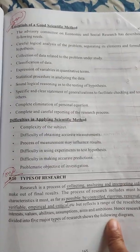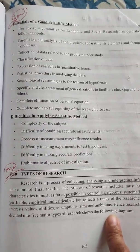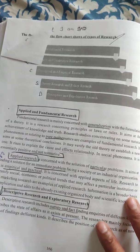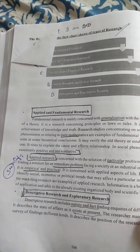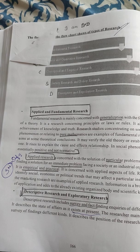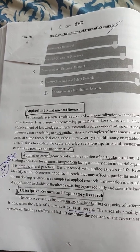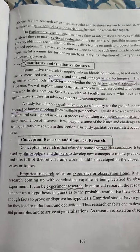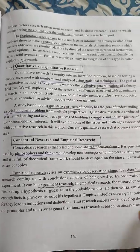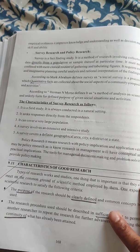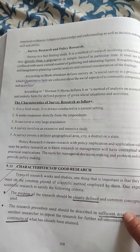This covers the essentials of a good scientific method, and the types of research. The types of research include: environmental research, descriptive and exploratory research, quantitative and qualitative research, conceptual research and empirical research, and survey research and policy research.